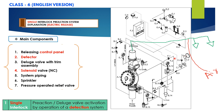Electrical release systems require an electric solenoid valve controlled by an approved releasing control panel with a compatible detection system. In fire condition, when the detection system operates, the system control panel energizes the solenoid valve to open, causing the deluge valve to open. The sprinkler system then fills with water. If any sprinklers have opened, water will flow from the system; if sprinklers have not opened, water will remain in the sprinkler system piping only. A sprinkler head must open before water flows from the system.